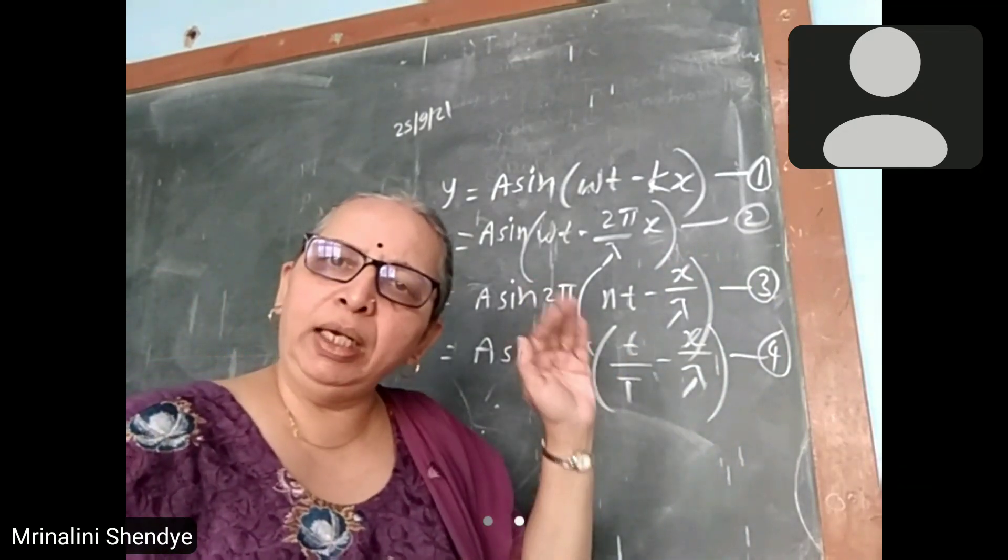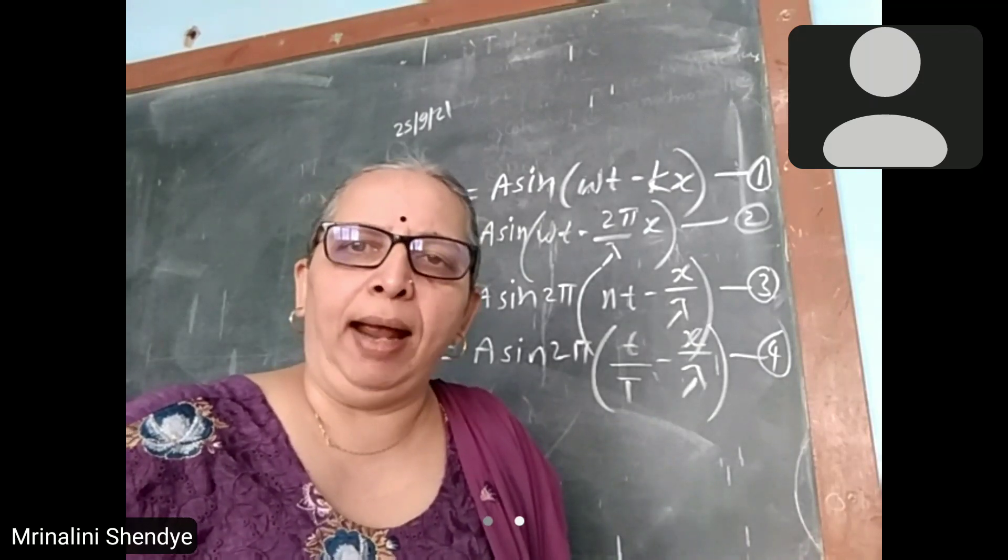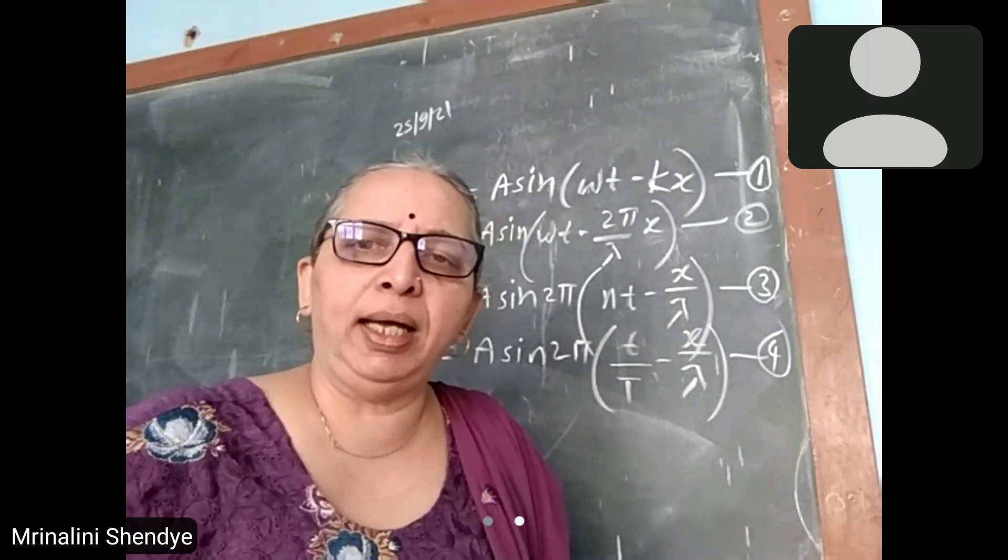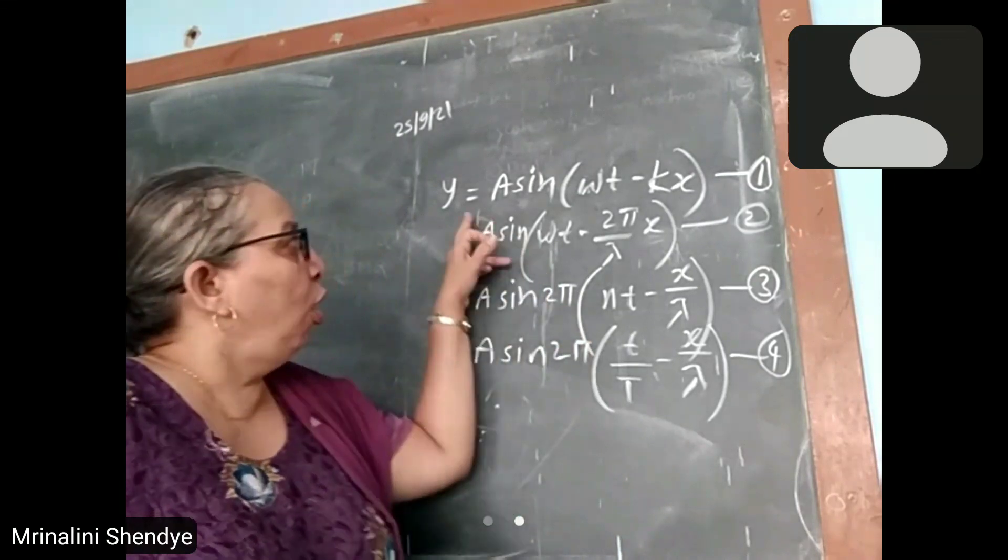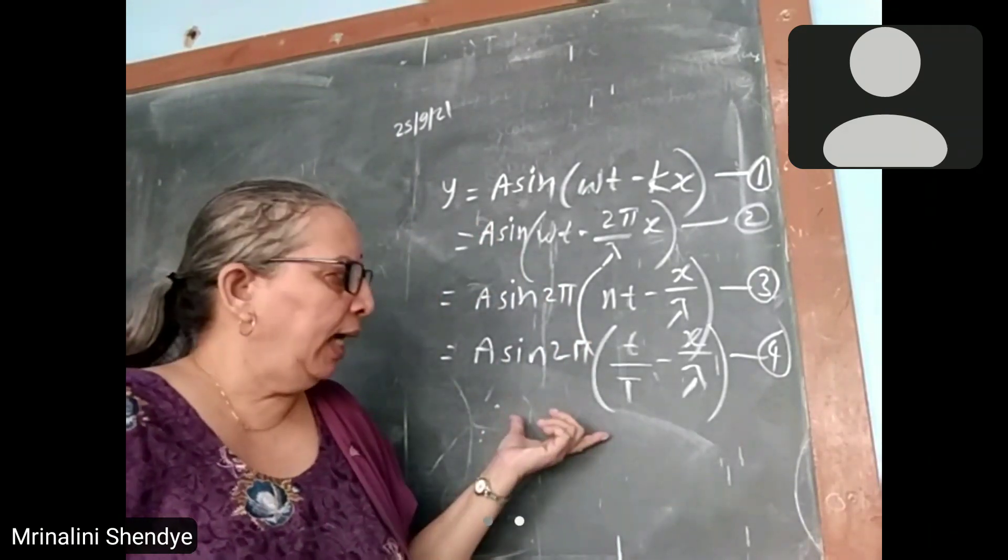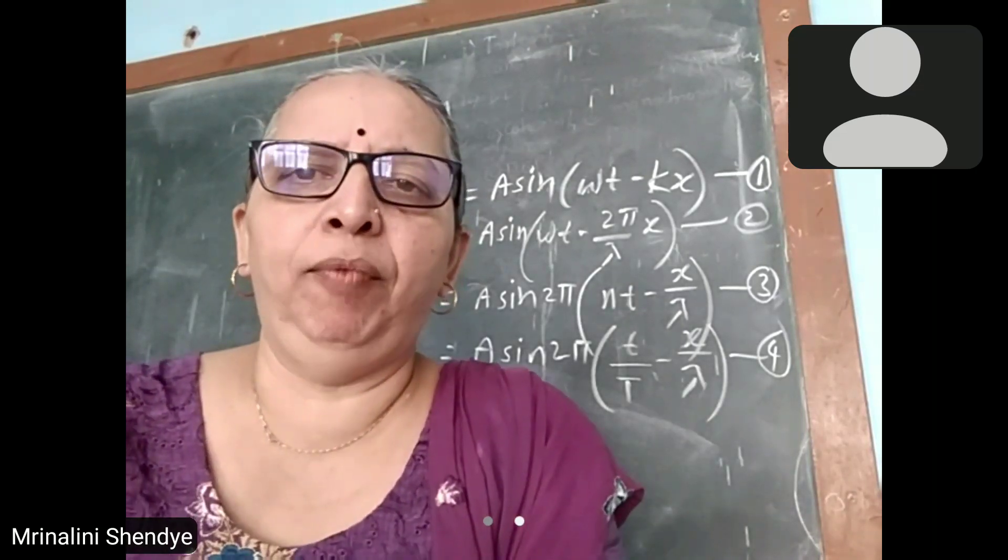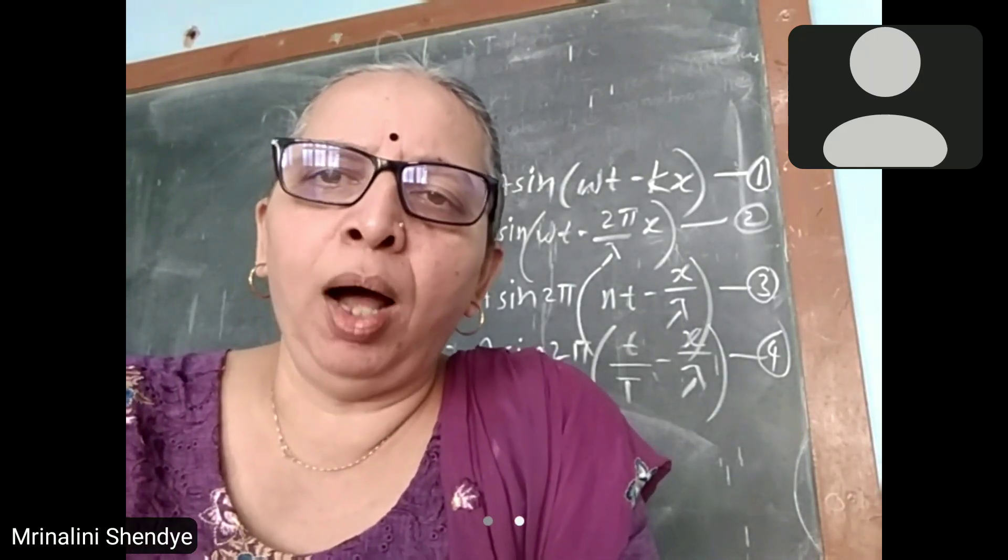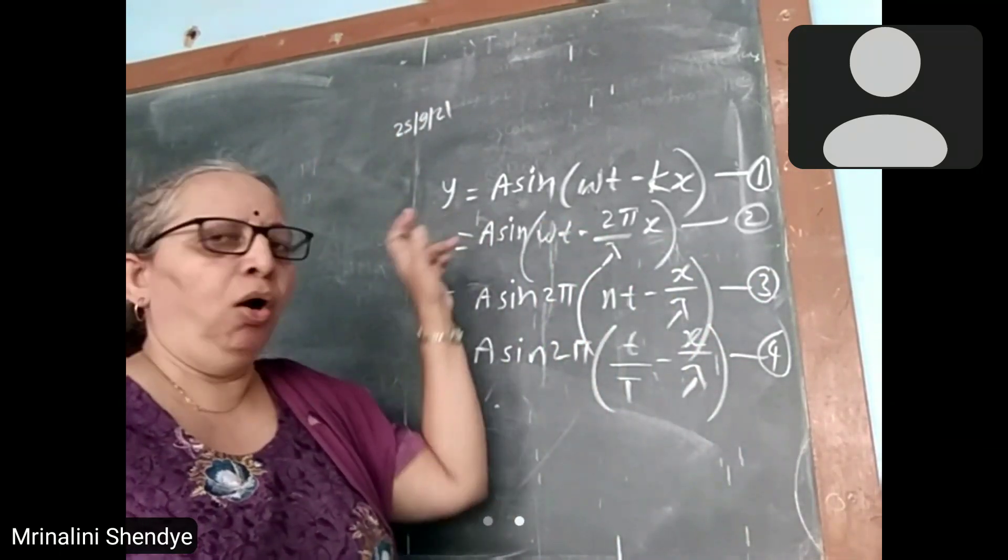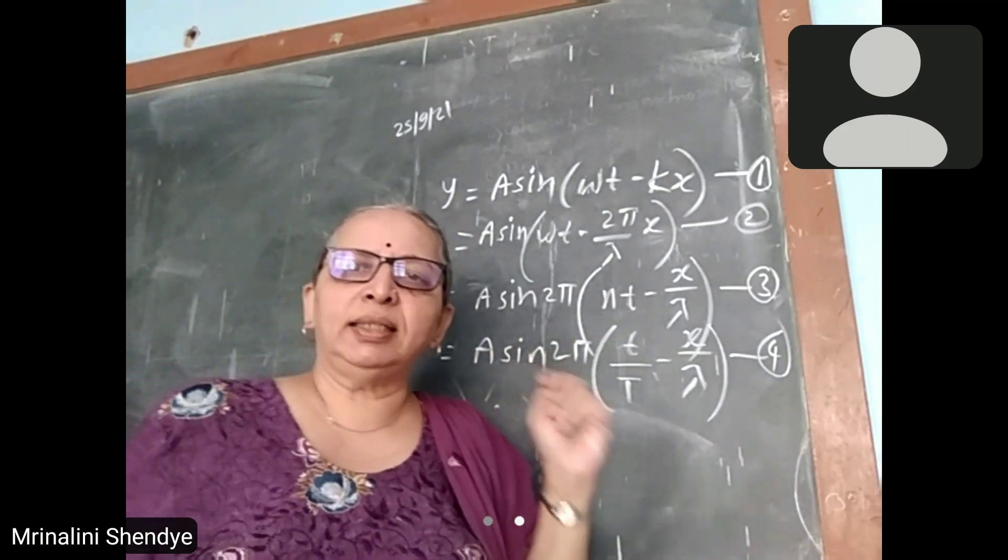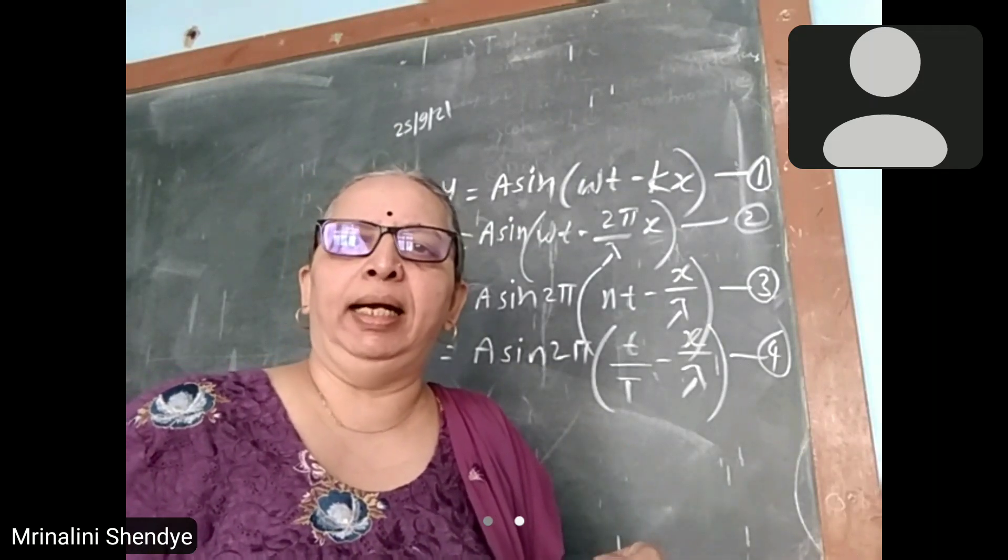By any of these forms, each and every simple harmonic progressive wave traveling in positive direction of x-axis and setting the particles in SHM along y direction can be represented. Now, when we learn superposition of waves, we need to learn two waves. One equation is y1, and the other equation is y2. While studying phenomenon of interference, we have selected this form.